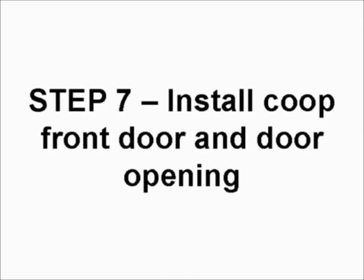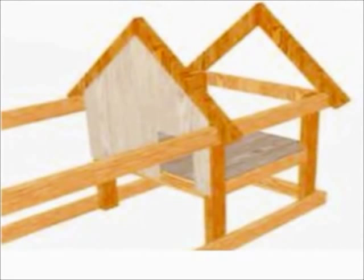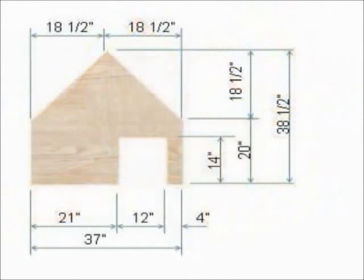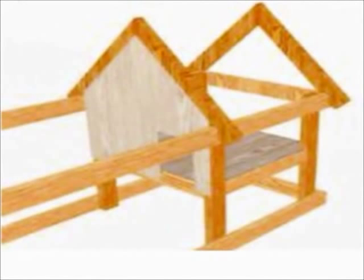Step seven, install the coop front wall and the door opening. The front wall is made out of half inch plywood cut 37 inches by 38 and a half inches. Attach this to the inside of the second truss as shown in the diagram. It can be nailed to the truss and the vertical legs using 4D nails.